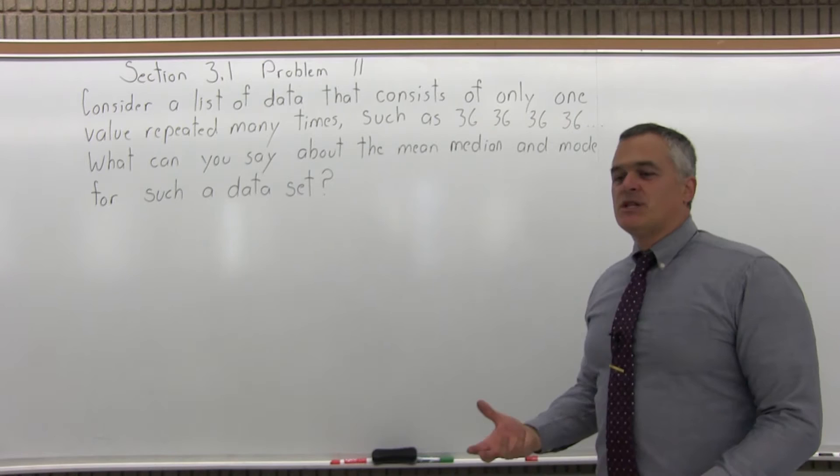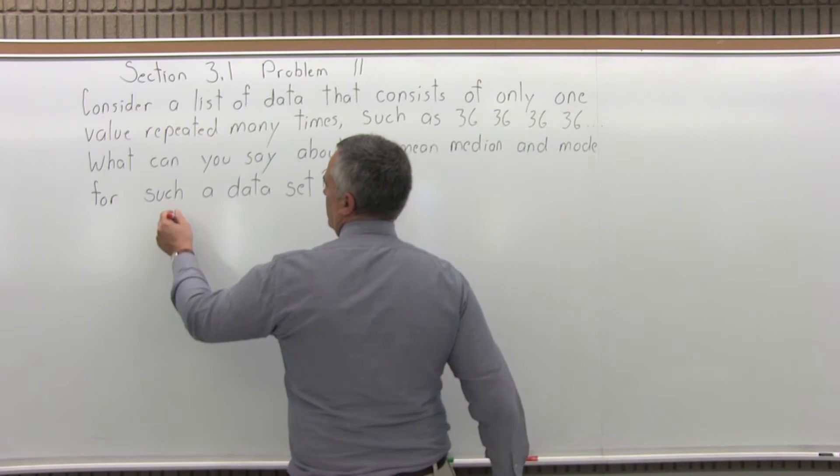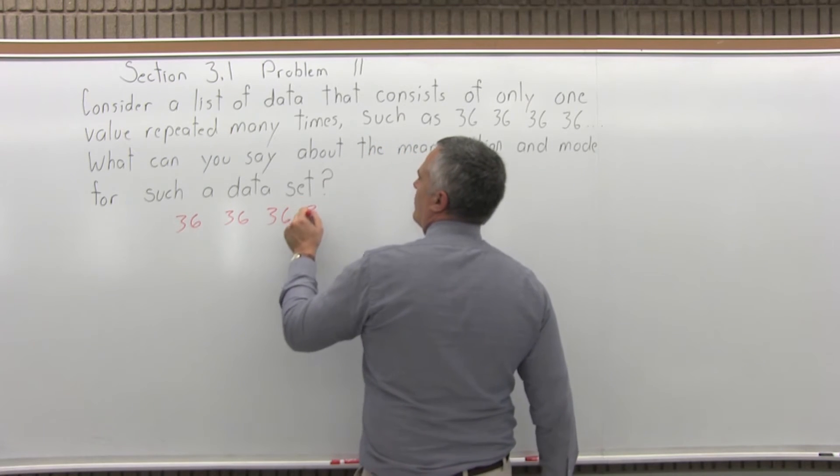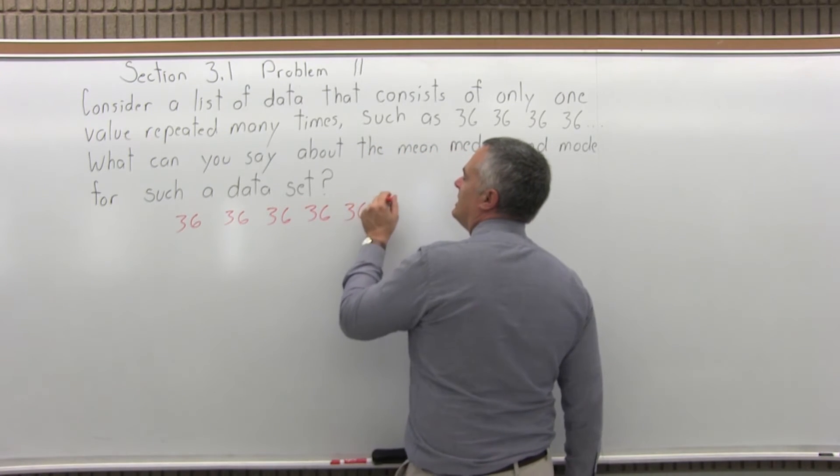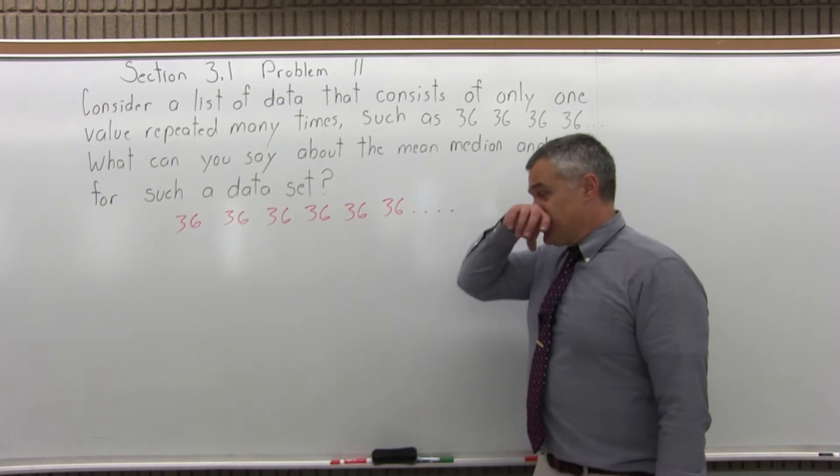So there's not really any computation to do with this. I had said 36, it could be anything, 28, 28, 28, just over and over and over again. And how is that going to affect the mean, median, and mode? Well, let's consider them separately.